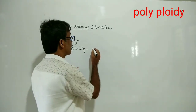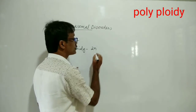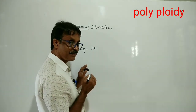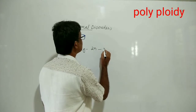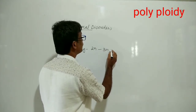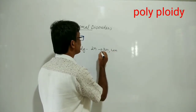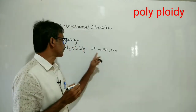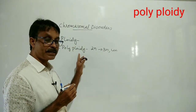The normal chromosome number is 2n. When the 2n becomes 3n or 4n etc., then that condition is called polyploidy.